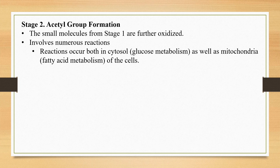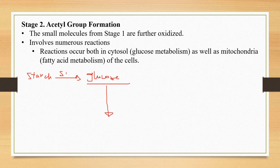The acetyl groups will be converted further into acetyl-CoA. This stage involves numerous reactions. For example, starch undergoes stage one where it is broken down into glucose. When glucose enters the cell, it is processed through numerous reactions and eventually converted into two molecules of pyruvate.